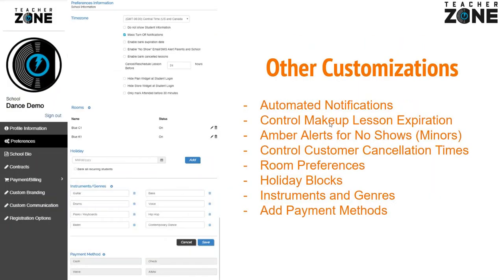Other customizations you can do: you can automate notifications, control makeup lesson dates, amber alerts — if a minor child doesn't show, it will alert the parent if you mark that on attendance — customer cancellations, room preferences, holiday blocks, instruments and genres, any type of payment method you want to add. Once you set the system up, you can automate everything within the school.